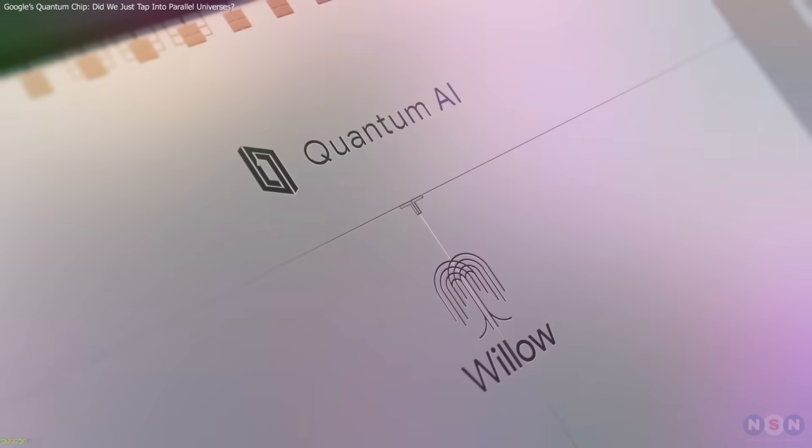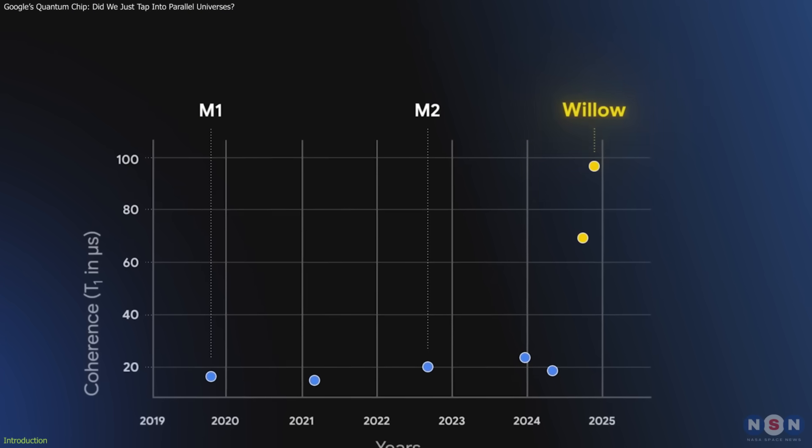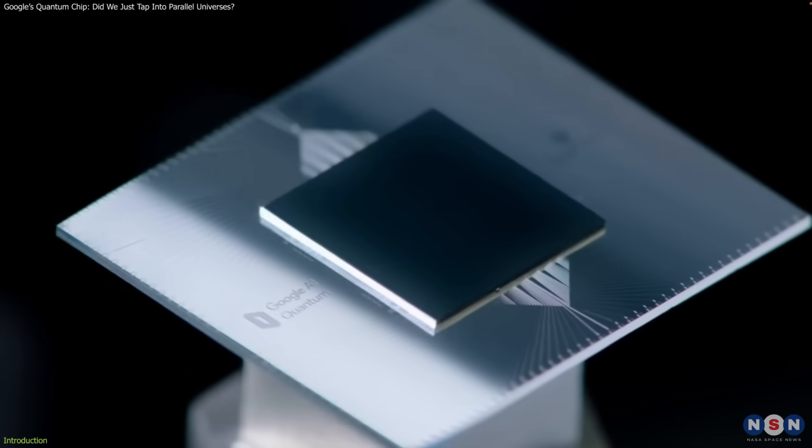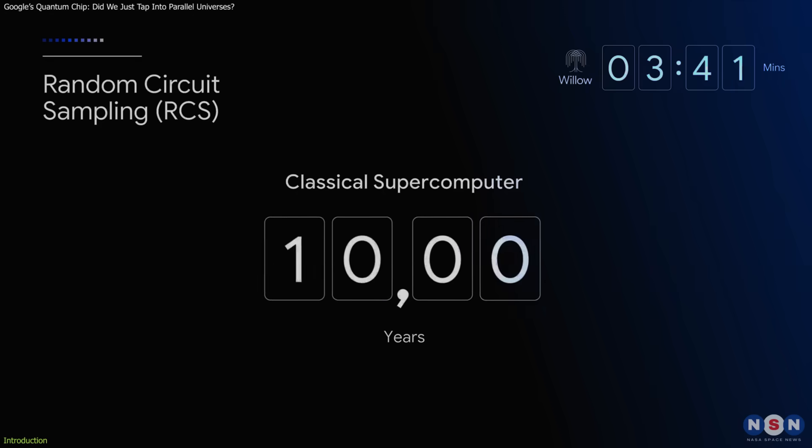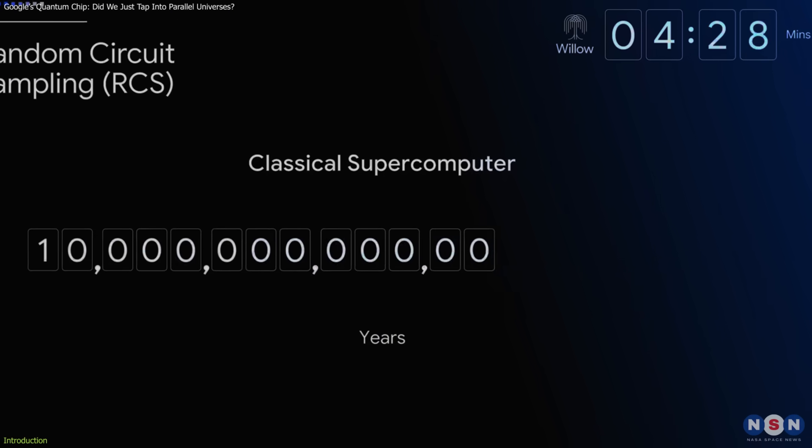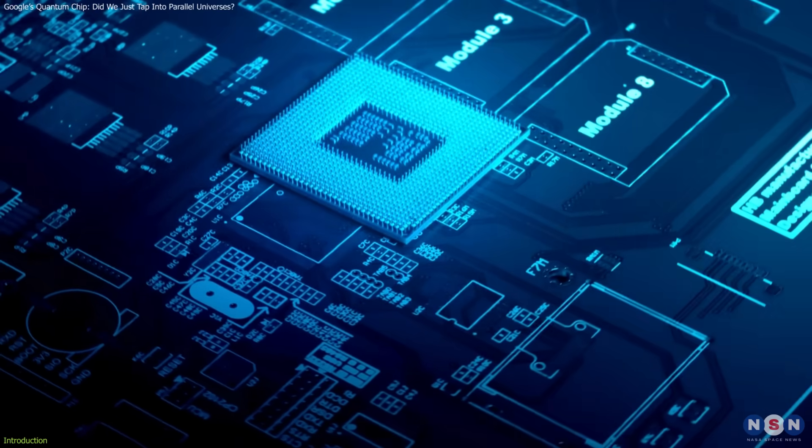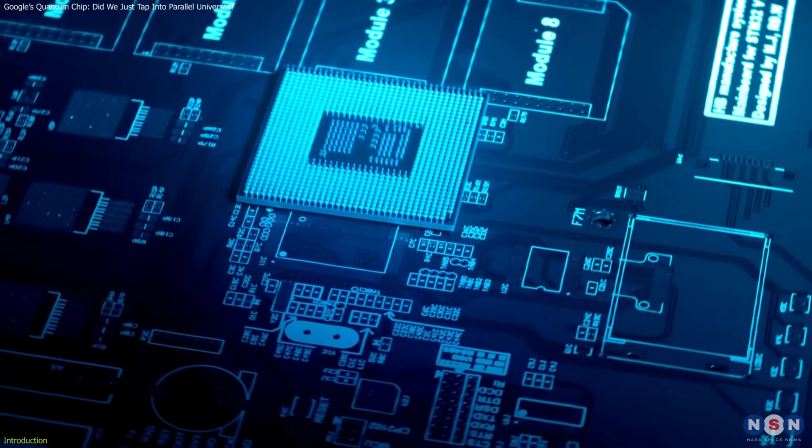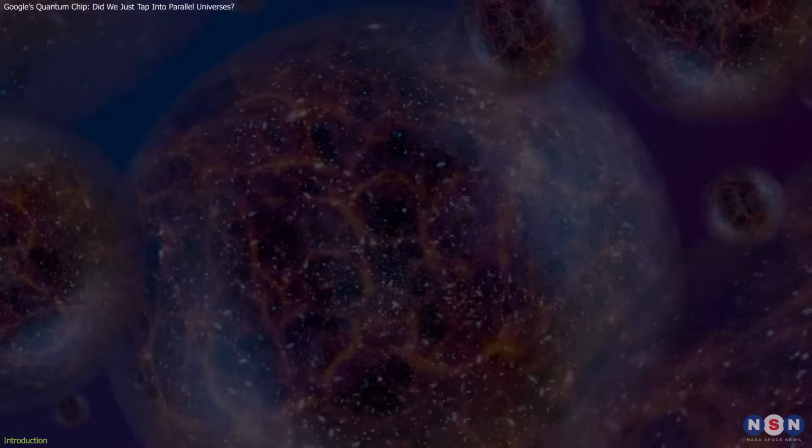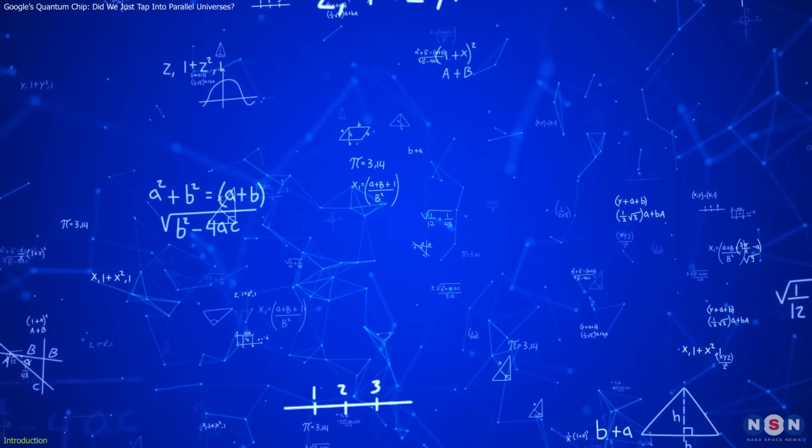Let's talk about Google's Willow chip, a quantum computer so powerful it's making scientists question reality itself. Willow didn't just break records, it shattered them. It solved a problem in under five minutes that would take the fastest supercomputers on Earth 10 septillion years to finish. And here's the twist.